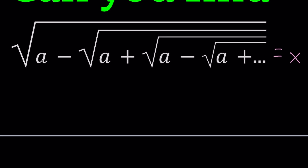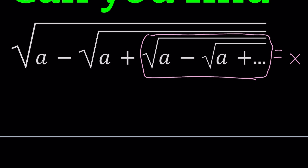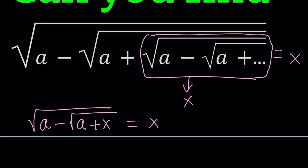Once you set the whole thing equal to x, you can square both sides and keep going. But here's what I want to show you: the expression starts with the same pattern — square root of a minus the square root of a plus the square root of a minus the square root of a — so it's the same thing as x. This expression contains itself, infinitely many times. Having said that, let's plug it in: we get the square root of a minus the square root of a plus x, equals x.